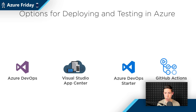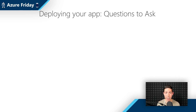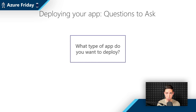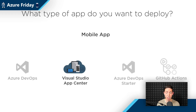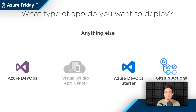So how do you choose between these services? I ask a very simple question: what type of app do you want to deploy? Once you've answered that, you can look at the functionality of these different services to see if they fit your needs. Is it a mobile application? Then you would use Visual Studio App Center, which is specialized in testing and deploying mobile applications. If it is anything else, then you can use Azure DevOps, Azure DevOps Starter, or GitHub Actions.